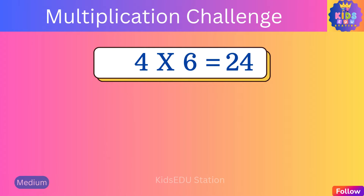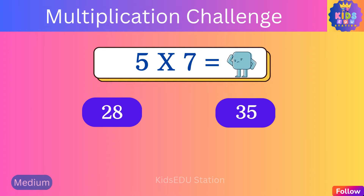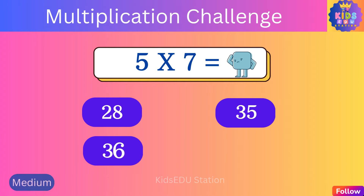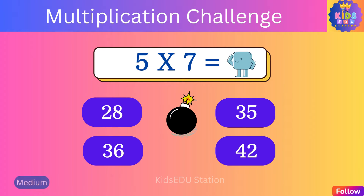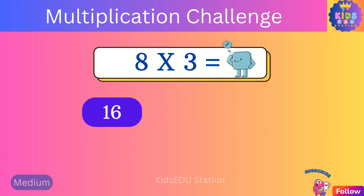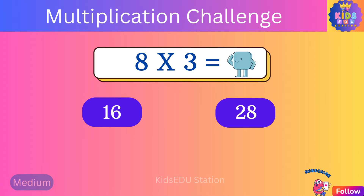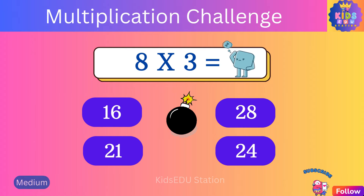What is five times seven? Twenty-eight, thirty-five, thirty-six, forty-two. Five times seven is thirty-five. What is eight times three? Sixteen, twenty-eight, twenty-one, twenty-four.